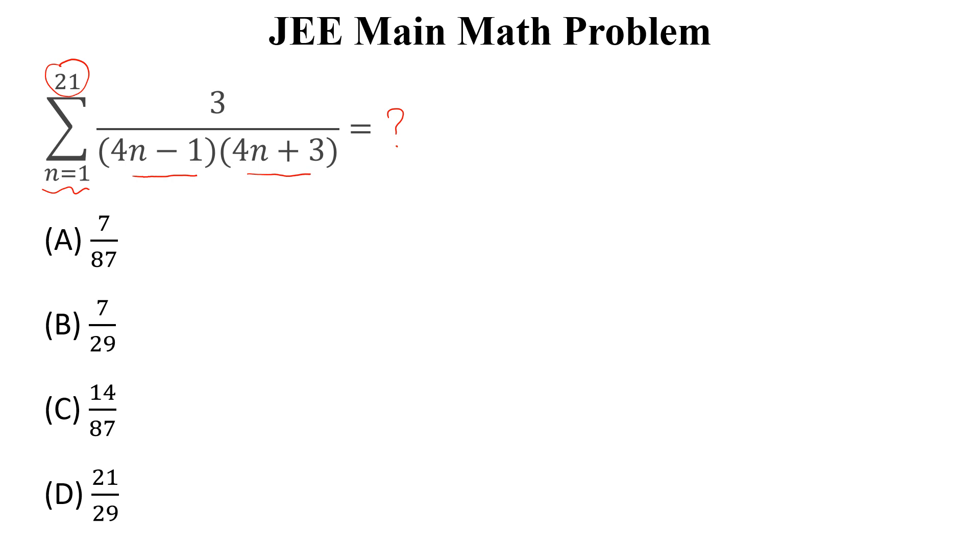So we can solve this question by partial fraction. We can write this as summation n starts from 1 up to 21, A divided by (4n minus 1) plus B divided by (4n plus 3).